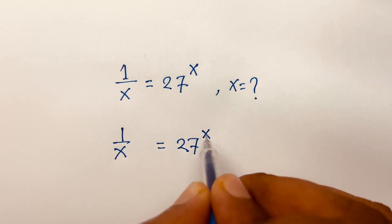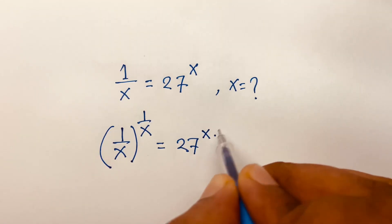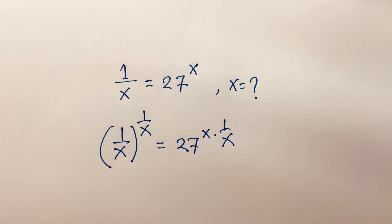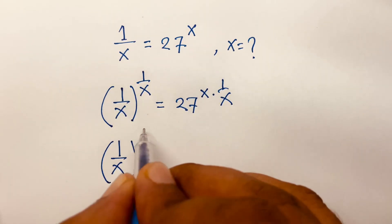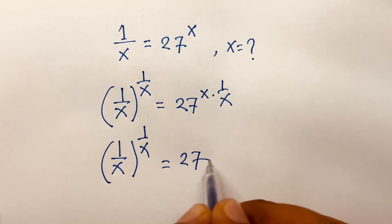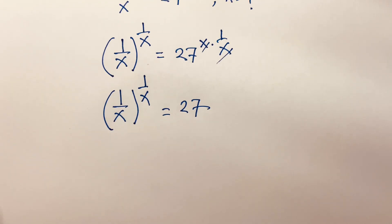I use both sides power 1 over x. Then it will be (1/x) power 1 over x equals 27. Look, this x and this x are cancelled. Then I can say (1/x) power 1 over x equals 27.